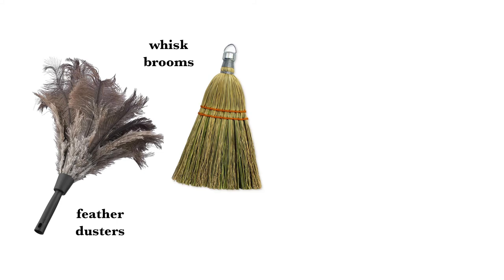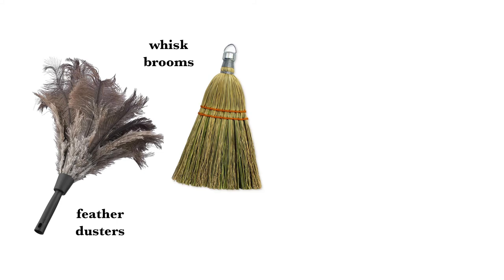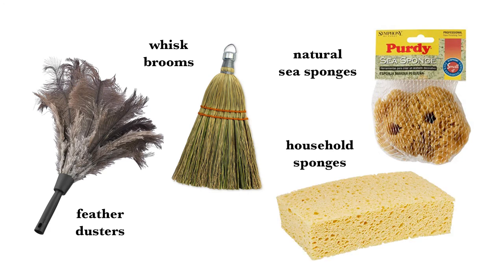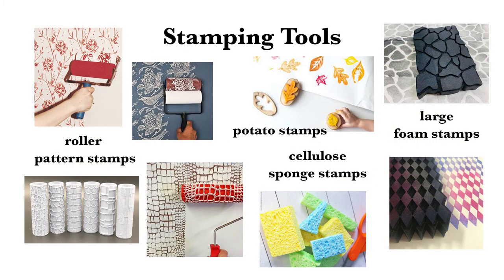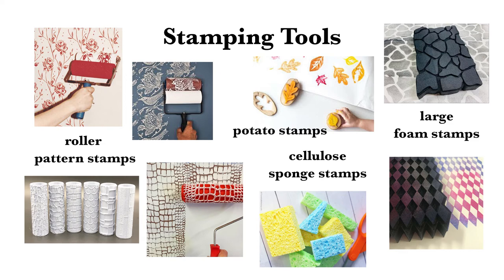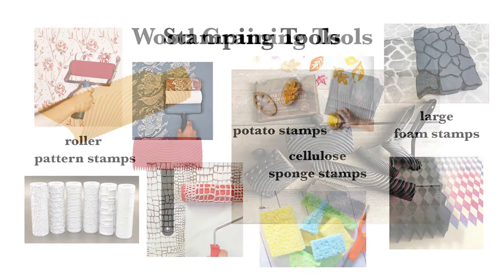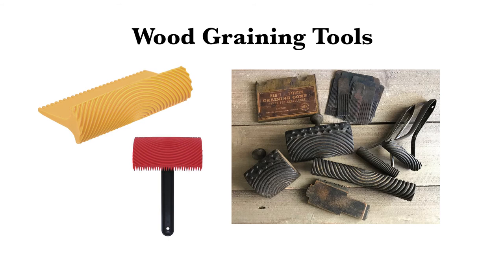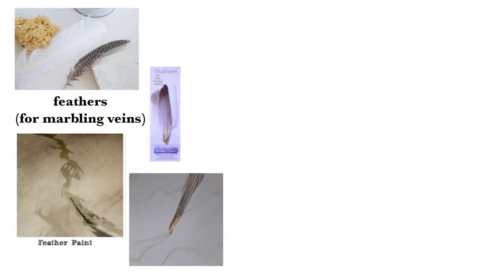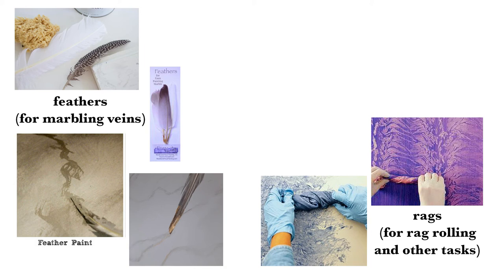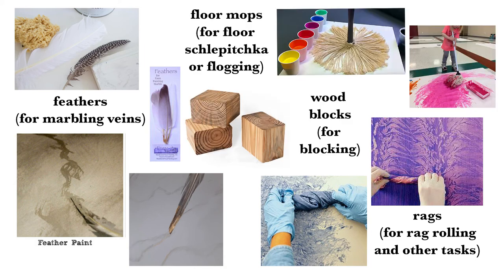Other tools include feather dusters, whisk brooms, sponges — natural sea sponges are most common for scene painting, but household sponges can be used to make stamps and other patterns — paint stamping tools and rollers, wood graining tools, feathers, rags, wood blocks, and mops. With imagination and creativity, most anything can become a paint tool.